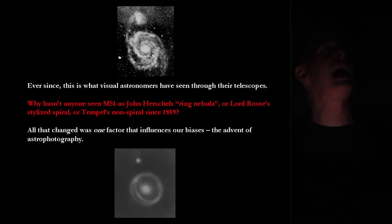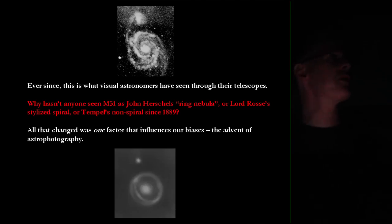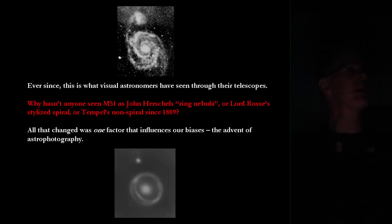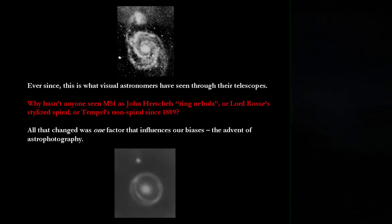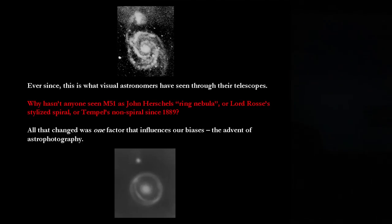That brings up the question: why hasn't anyone seen M51 as John Herschel did anymore — or Lord Ross's stylized spiral, or even Temple's non-spiral — since the first good photograph? The only thing that changed were biases. The advent of photography changed our bias because now we had what we considered an objective image of what these things look like. In my own experience, if you go out with your telescope and point it at M51 some spring night and really convince yourself that John Herschel's double ring nebula is what it looks like, you'll see it. It's almost like an optical illusion — you just have to tell your brain that's what it really looks like and suddenly there it is.